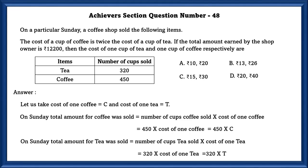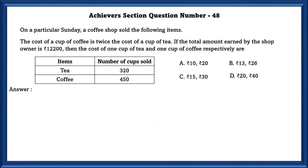On Sunday, total amount for tea sold is equal to number of cups T sold into cost of 1 T, which is equal to 320 into T. Given coffee is twice cost of T, we can write this as C equal to 2 into T, which is equal to equation 1.